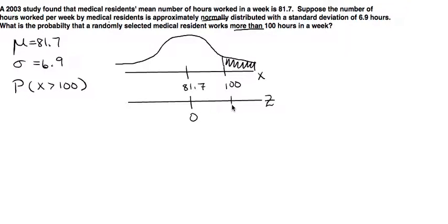The next thing that we're going to do is we're going to try and standardize this 100 by using the formula z equals x minus mu over sigma. Now we're going to plug in the variables, the numbers that we have.